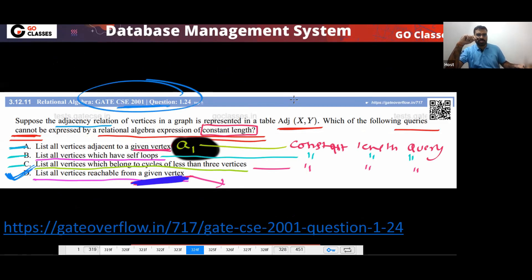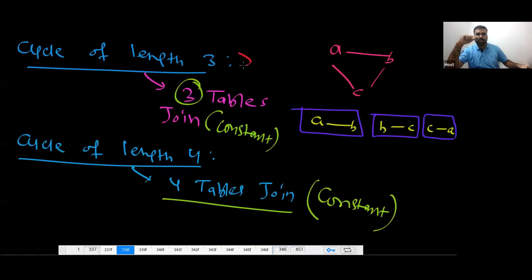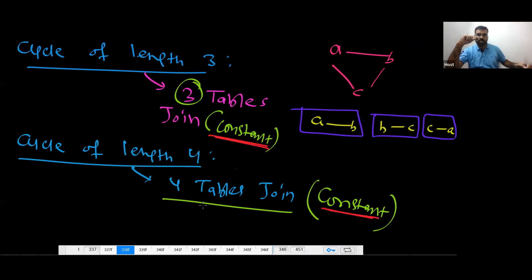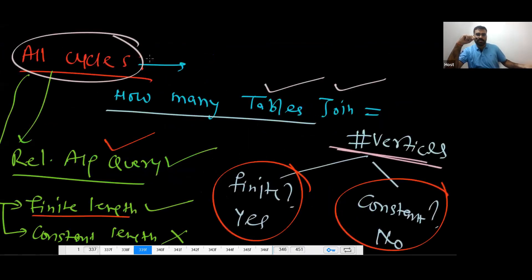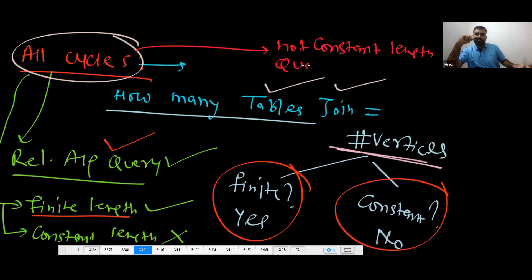Nowadays if this question comes in GATE, they will ask it as an MSQ. Cycles of length three: constant length. Cycles of length four: constant length. But all cycles — not a constant-length query in relational algebra.